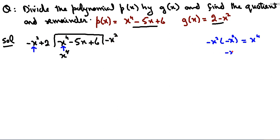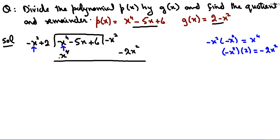अब −x² को +2 के साथ भी multiply करना है: minus × plus = minus, so −x² × 2 = −2x²। इधर dividend में x² वाली कोई term नहीं है, तो −2x² बाहर लिखते हैं। Sign change होगी: +x⁴ minus बनेगा, और minus था तो plus बनेगा। x⁴ − x⁴ = 0, cross it out। बचे: −5x + 6, और +2x²।